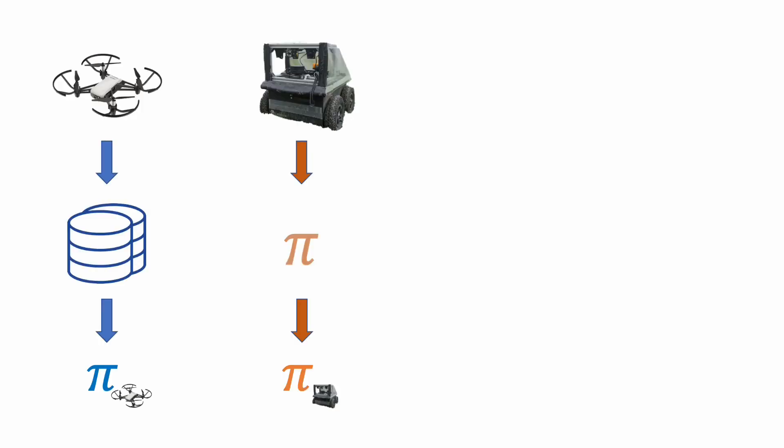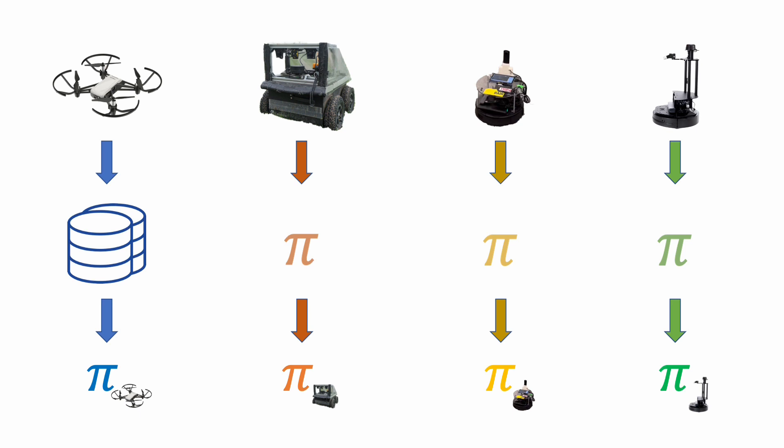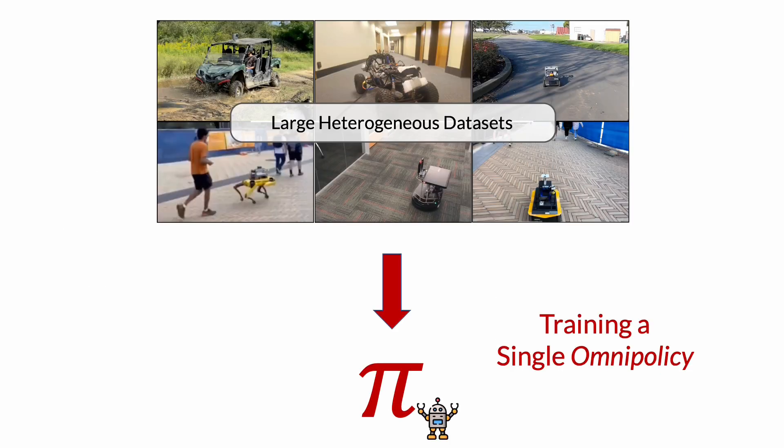Unlike the general paradigm of robot learning for navigation, where we use data collected from each individual robot and sensor configuration to train a policy for that specific robot, we show that we can train a single omnipolicy from a heterogeneous dataset collected on six different robots, giving us our general navigation model.